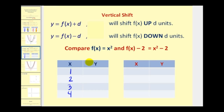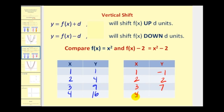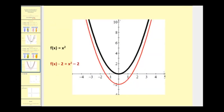For f of x, we square the input: 1, 4, 9, 16. For f of x minus 2, we use the same inputs, square them, then subtract 2: 1 minus 2 is negative 1; 4 minus 2 is 2; 9 minus 2 is 7; 16 minus 2 is 14. Comparing the y values, all values in the shifted function are 2 less than the original, so this function is 2 units lower. On the graph, we pick any point on the original function and move it down 2 units.